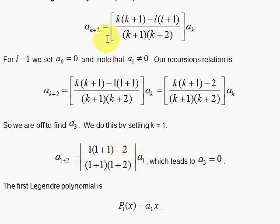a sub 3 is 0. And then when you look for a sub 5 in terms of a sub 3, well, since a sub 3 is 0, a sub 5 is 0. And then if you look for a sub 7 in terms of a sub 5, well, since a sub 5 is 0, a sub 7 is 0. So we're finished.